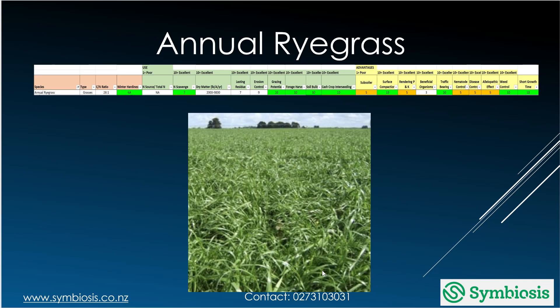Annual ryegrass is reasonably okay at scavenging nitrogen, brilliant at grazing, a good soil builder, and good for surface compaction. One thing to be careful of is using too much annual ryegrass, as it can choke out a lot of other plant species — so just something to be mindful of.